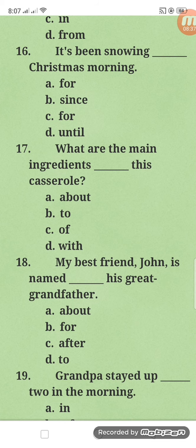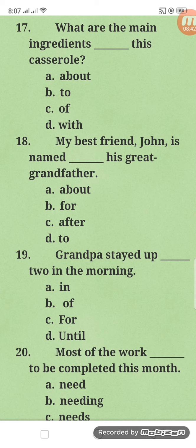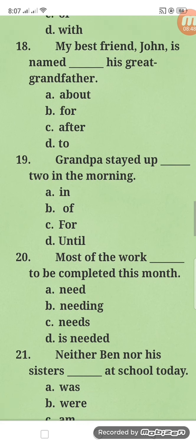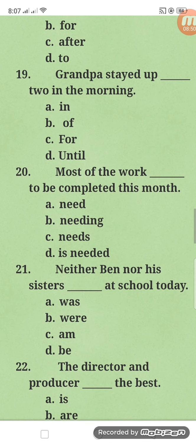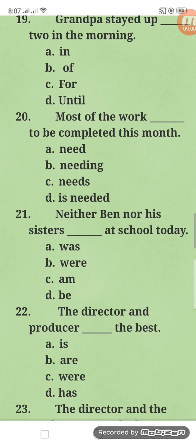Number seventeen: what are the main ingredients of this casserole? Number eighteen: my best friend John is named after his great-grandfather. Number nineteen: grandpa stayed up until 2 in the morning — not 'for,' not 'of,' not 'in,' but 'until' — that marks the end of the time.